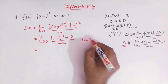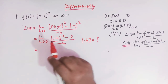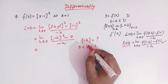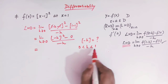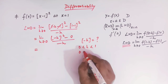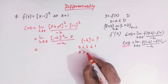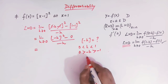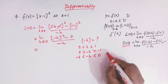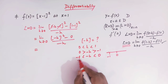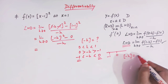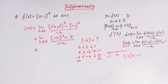We need to assign a value to the greatest integer of (-h). Since h lies between 0 and 1, multiplying the inequality by -1 reverses direction: -1 < -h < 0. So -h lies between -1 and 0, which means the greatest integer of (-h) must equal -1.